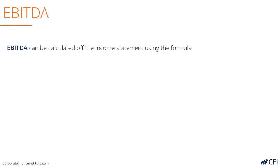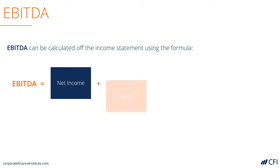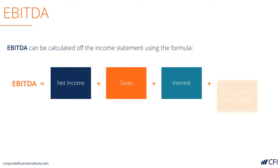Let's take a closer look at EBITDA. EBITDA can be calculated on the income statement using the following formula. If you start at the very bottom of the income statement, you can take net income or net earnings, add back taxes, interest, and depreciation and amortization, as well as perhaps some unusual or other non-cash items that should be added back.